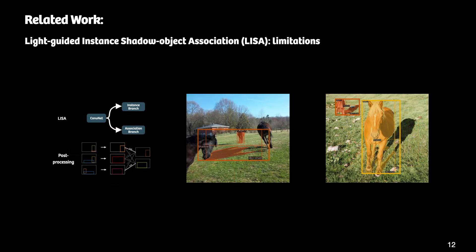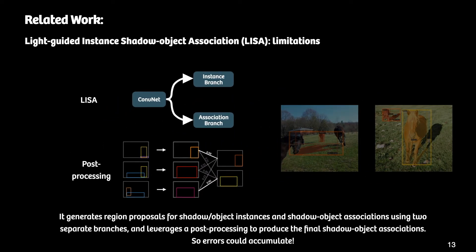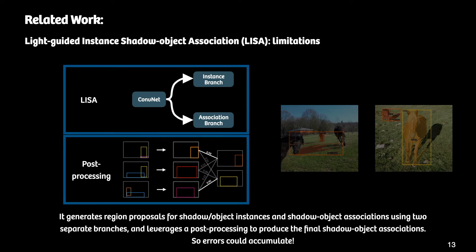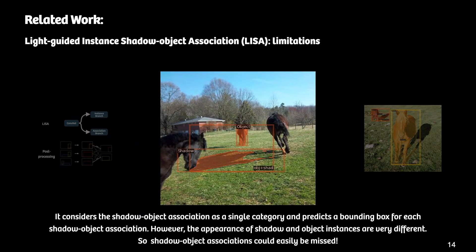After revisiting this task, we found various limitations in LISA. First, the generated region proposals for shadow-object instances and shadow-object associations used two separate branches and leveraged post-processing to produce final shadow-object associations, so errors could accumulate. Second, it considers the shadow-object association as a single category and predicts a bounding box for each association; however, the appearances of shadow and object instances are very different, so shadow-object associations could easily be missed.